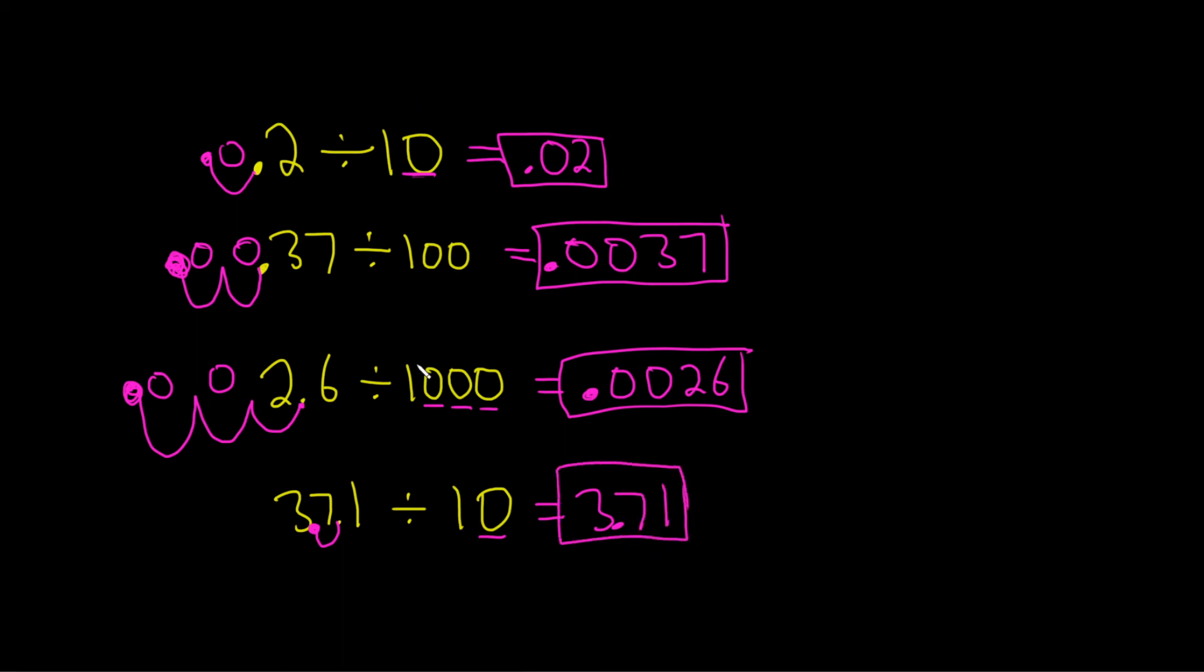So whenever you divide by 10, 100, or 1,000, you go left with the decimal. I hope this video has been helpful.